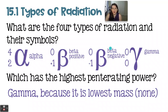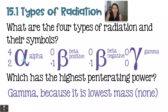The symbol for alpha is an A that's a little scripty, kind of looks like a fish, and it has the same composition as a helium nucleus. It has a mass number of four and an atomic number of two, and this is a positive form of radiation because of those two protons flying through space. Because this is a very hefty, mass-wise form of radiation, it has a very low penetrating power.